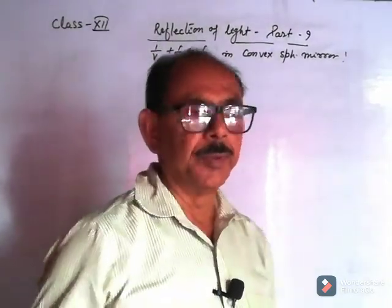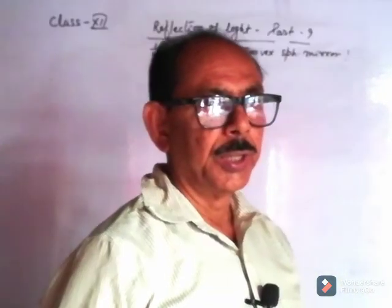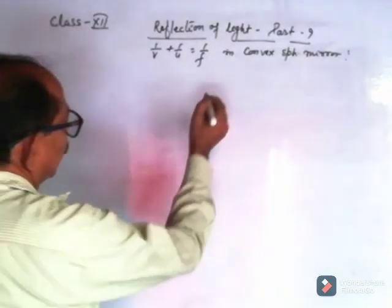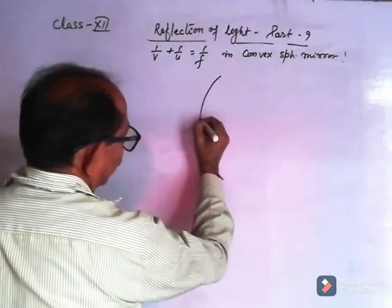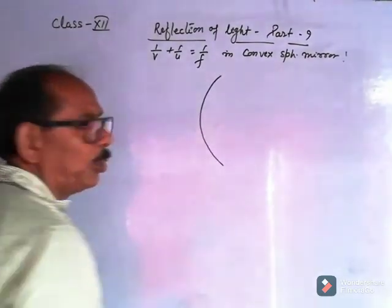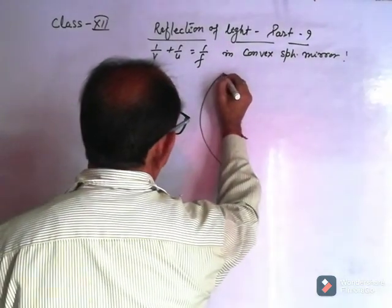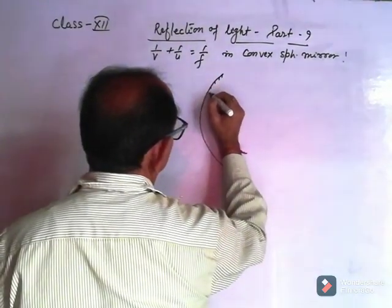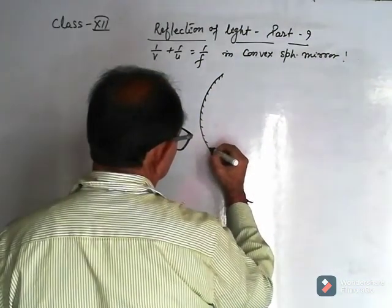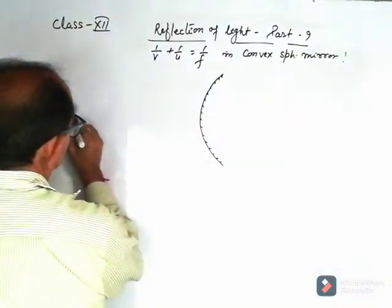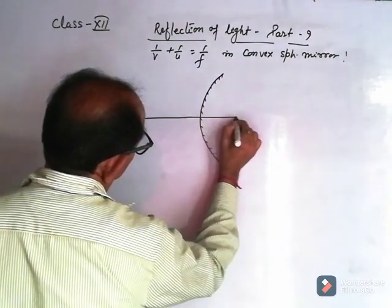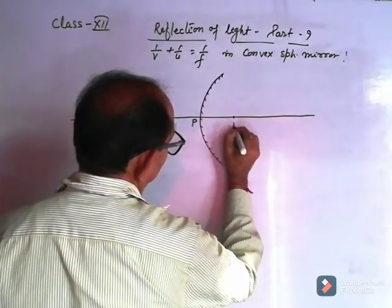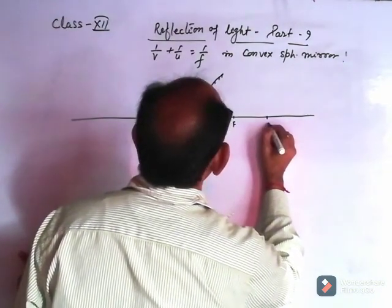We have some arguments from students to give the derivation on the board. To draw the diagram — this is the convex mirror. This is your pole P, this is the focus F, and this is your center of curvature C.